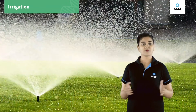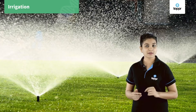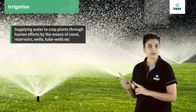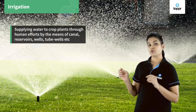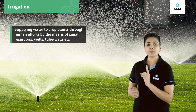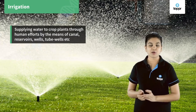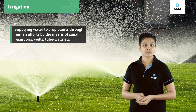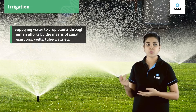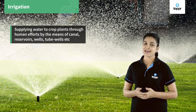Simply, we can define irrigation as supplying water to crop plants through human efforts by the means of canals, reservoirs, wells, tube wells, etc.